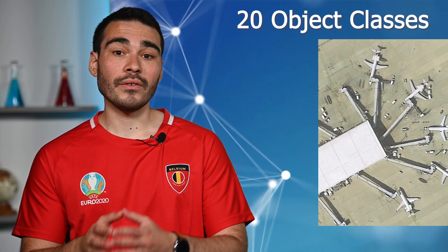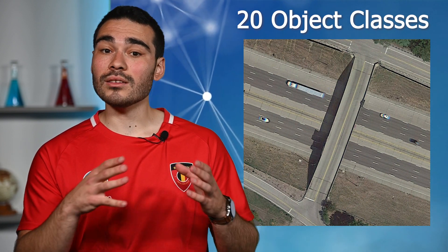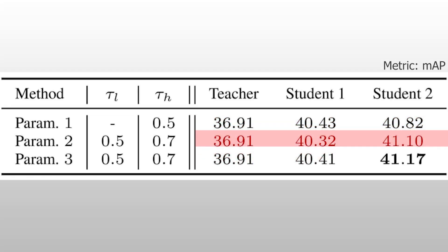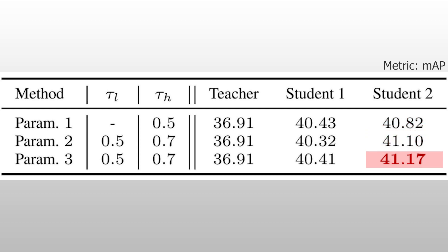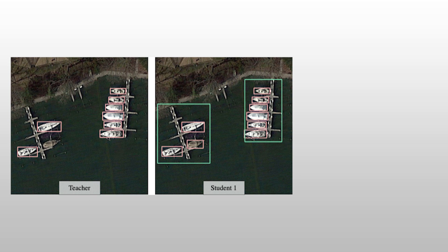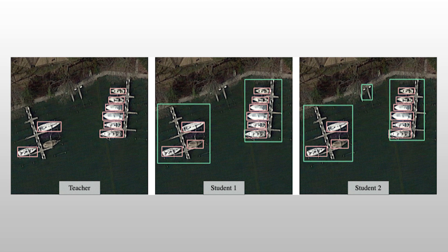We tested our method in two use cases for object detection. First, for the satellite images, we use a dataset comprising 20 different objects, such as airports, vehicles and bridges, for which the annotated dataset consists of approximately 2000 images, and we have an extra 17,000 raw images at our disposal. As you can see, we are able to systematically improve the performance for all strategies and at each iteration. The best performance is achieved with progressive doubt after the second iteration. Let's take a concrete example: in the first prediction of the teacher, we can see that the boat and the harbors are missing. Then the first student is able to detect the boat but still misses the small harbor. Finally, the second student perfectly predicts all objects.